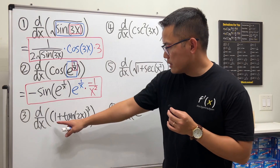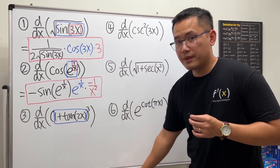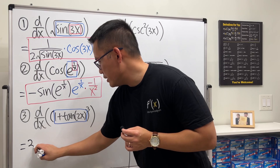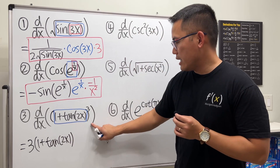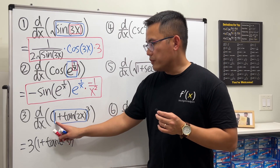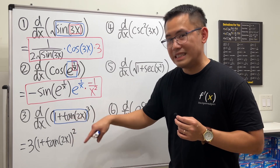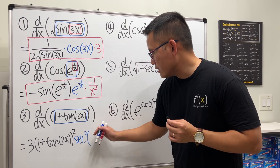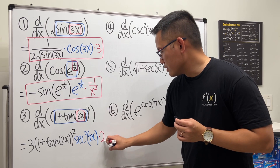Number 3: the outer function is this to the third power, so we have the box to the third power. We use the power rule first — bring the 3 to the front and subtract 1. The first step gives us 3 times (1 + tan(2x)) to the second power. Now we differentiate the inside: the derivative of 1 is 0. Tangent and secant are best friends — the derivative of tangent is secant squared. So we multiply by secant squared of 2x. Then we take the derivative of 2x, which is 2, and multiply by that.